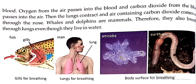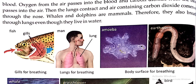देखो, यह person यहाँ पे है — हम यहाँ से breathing करते हैं, oxygen लेते हैं. ये nostrils हैं. Wind pipe के through अंदर जाता है, blood vessels होती हैं, जो lungs में oxygen पहुँचाती हैं. वहाँ से carbon dioxide lungs में आता है, और wind pipe से nostrils के through carbon dioxide बाहर निकलता है, और oxygen अंदर की तरफ जाता है.